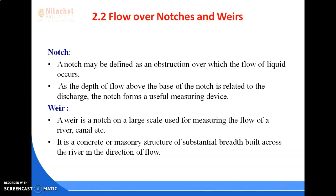It is a concrete or masonry structure of substantial breadth built across the river in the direction of flow. This allows the excess water to flow over its entire length to the downstream side. Thus, a weir is similar to a small dam constructed across the river with a difference that the excess water flows downstream only through a small portion called spillway. In case of weir, the excess water flows over its entire length.